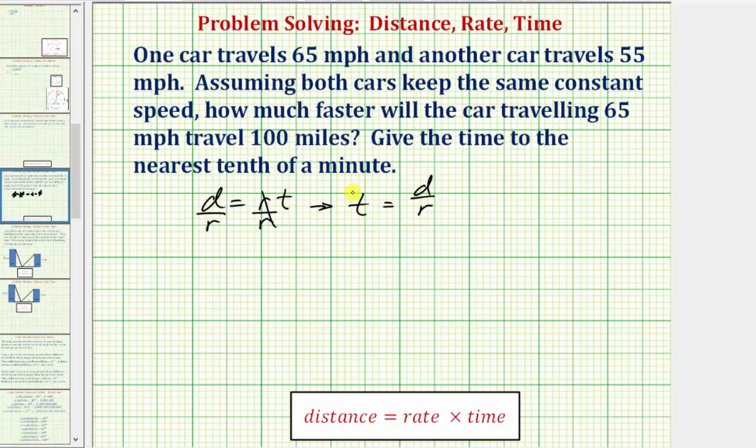And now we'll determine the time it takes the car traveling 65 miles per hour to travel 100 miles. Then we'll determine the time it takes the car traveling 55 miles per hour to travel 100 miles. Then we'll determine the difference in those times. So if we let t sub one be equal to the time it takes the car traveling 65 miles per hour to travel 100 miles, t sub one would be equal to 100 miles divided by 65 miles per hour. And if we let t sub two be equal to the time it takes the car traveling 55 miles per hour to travel 100 miles, t sub two would be equal to 100 miles divided by 55 miles per hour.